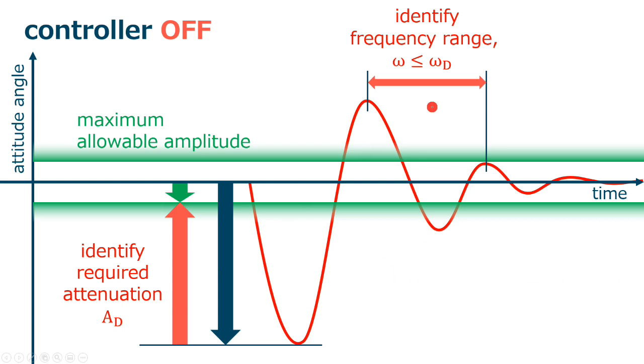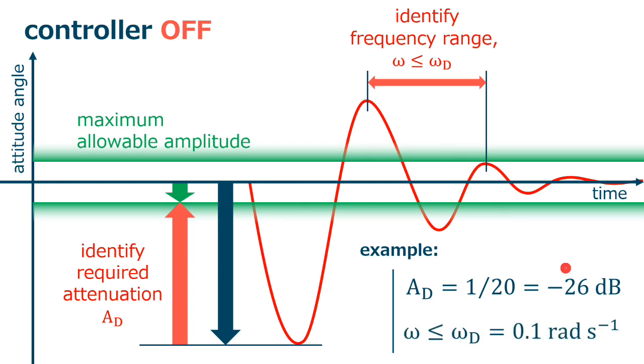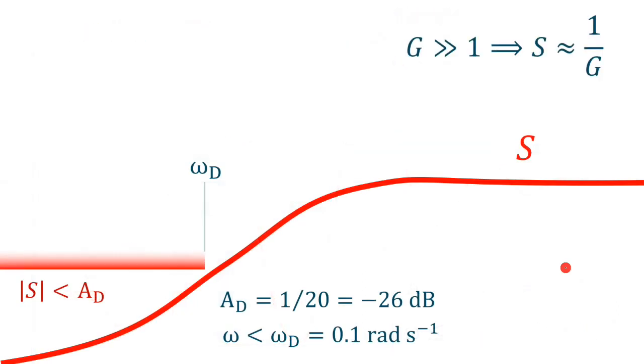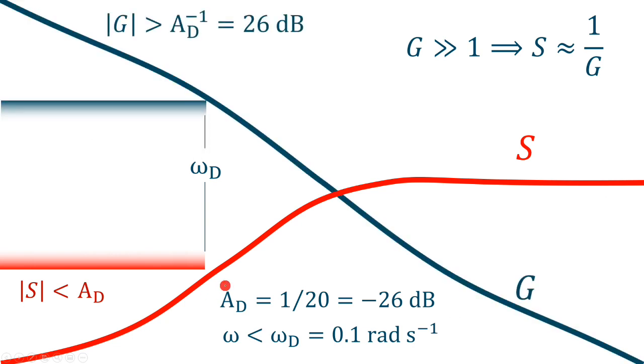For example, let's take 26 dB attenuation and 0.1 radians per second for the bandwidth. This means that our goal is that the sensitivity function goes below minus 26 dB. So, besides the usual phase margin and gain cross frequency, we have an additional condition for the minimum gain of 26 dB in the frequency range defined by omega D.